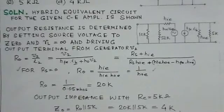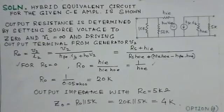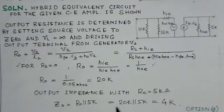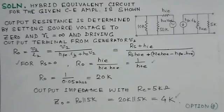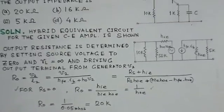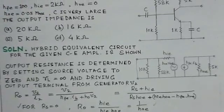So it will come as a load, so Z0 would be R0, the output resistance of the transistor in parallel to 5K ohm. So 20K ohm in parallel to 5K ohm equals 4K ohm. This is the output impedance of the stage, that means output impedance of the transistor amplifier including the biasing networks.